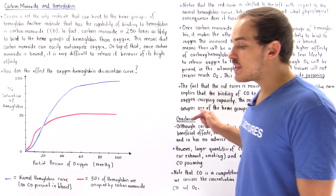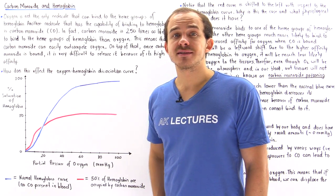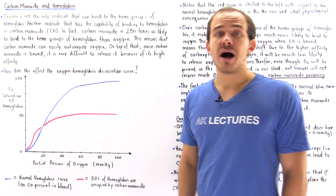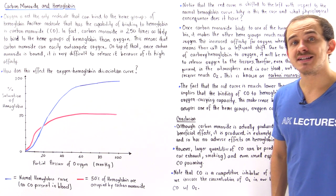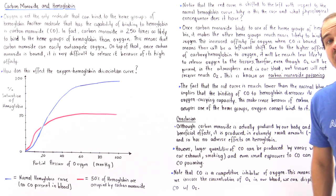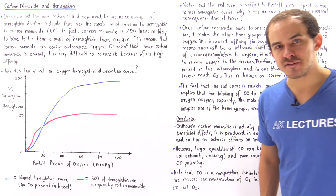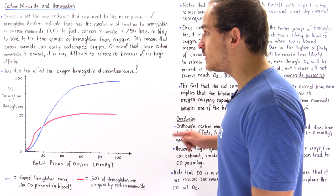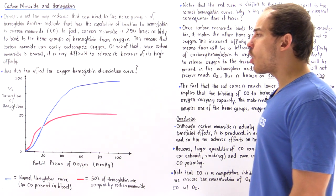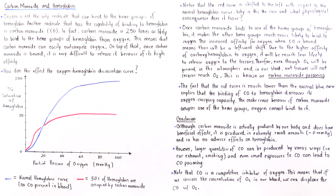On top of that, when carbon monoxide actually binds onto hemoglobin, because of its very high affinity, it is very difficult to actually displace and release the carbon monoxide from hemoglobin.